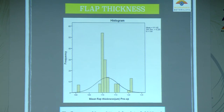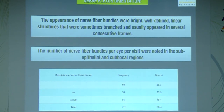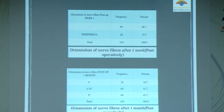Regarding nerve plexus orientation, nerve fibres appeared as bright, well-defined linear structures, sometimes branched or appearing in consecutive frames. Pre-operatively, no nerve plexus was seen in 41% of patients; sub-epithelial plexus in 23.6%; and both sub-epithelial and basal plexus in 35.4%. At one week post-operatively, no nerve plexus was seen in 66.7% and peripheral regeneration in 33%. At one month, central fibres were seen in 16.7%, central and peripheral in 41.7%, and peripheral fibres in 41.7% of patients.